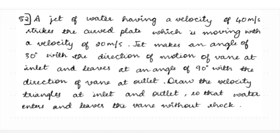Moving to the next question: a jet of water having a velocity of 40 meter per second strikes a curved plate which is moving with a velocity of 20 meter per second. The jet makes an angle of 30 degrees with the direction of motion of the vane at inlet and leaves at an angle of 90 degrees with the direction of the vane at outlet. Draw the velocity triangles at inlet and outlet so that water enters and leaves the vane without shock. This is an unsymmetrical vane problem, as two different angles are given: 30 degrees and 90 degrees.